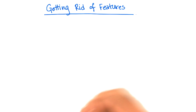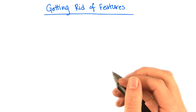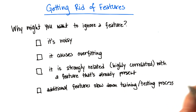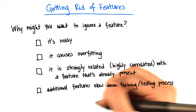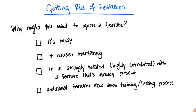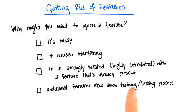So far we've talked about engineering new features that you might want to add to a dataset. But it's just as important to know how to get rid of features that you might not want. Now it might not be clear right now why you would ever want to get rid of a feature — you might be like, well, that's throwing out information, that's throwing out data. Why would I ever want to do that? And I would propose to you that there are many very good reasons why you might want to get rid of features. We'll be talking about some of those in the rest of this lesson.